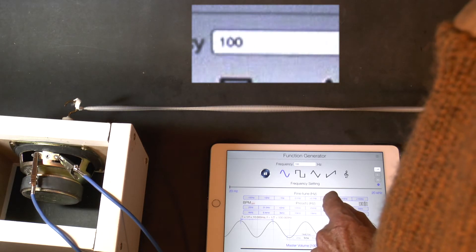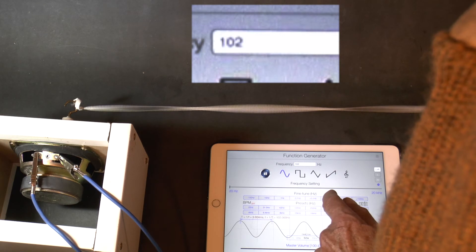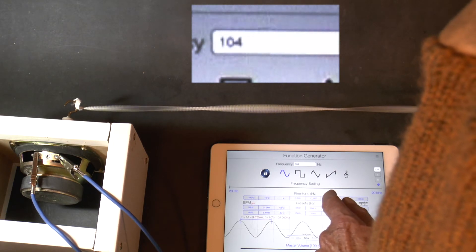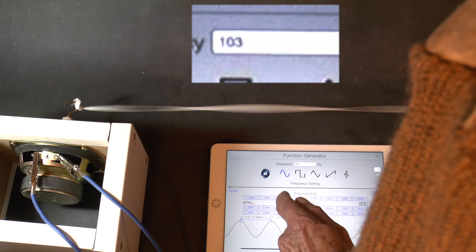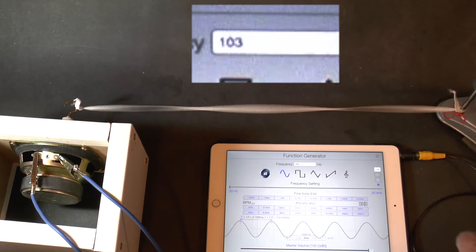Pushing up the frequency of vibration further, we get to another point where there are three loops in the string. So there are two nodes in the centre of the string, three loops. This is called the third harmonic. Notice the frequency is about three times the fundamental, three times 34.